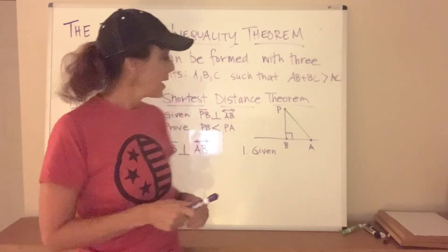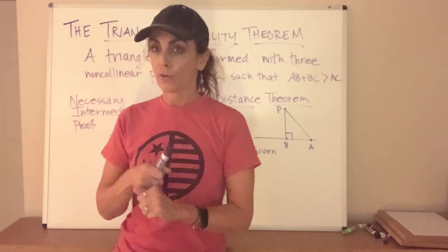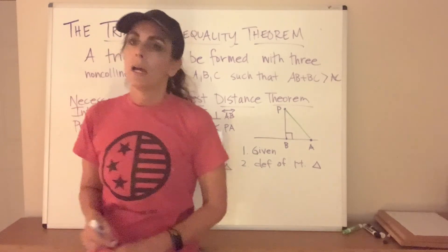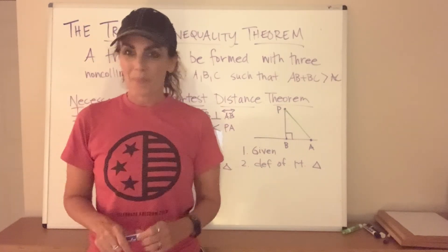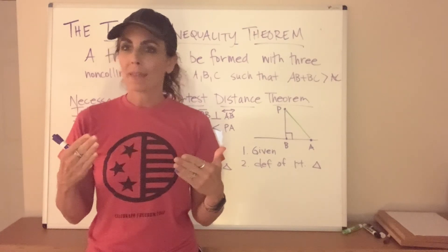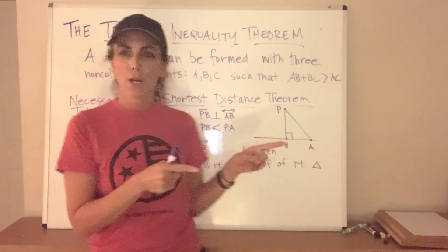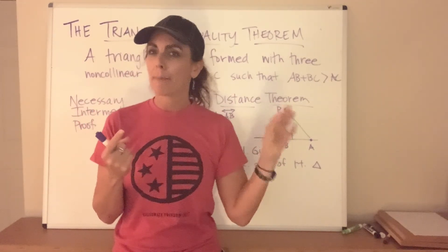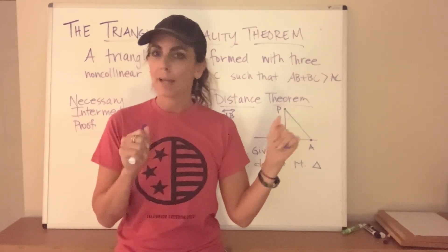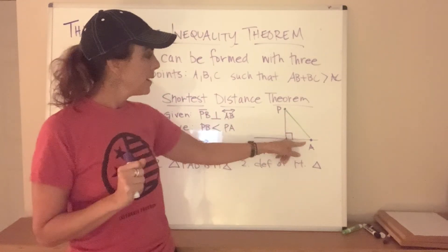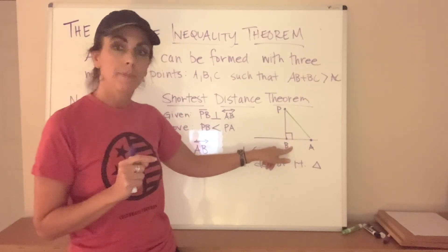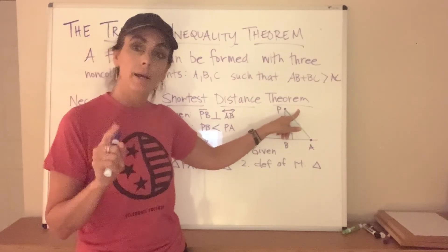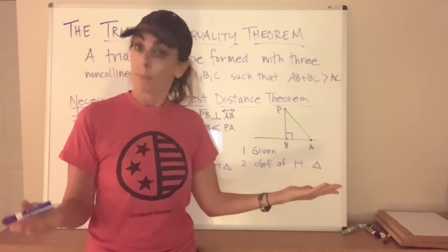We claim triangle PAB is a right triangle based on the definition of a right triangle. Next we're going to use the Pythagorean theorem. Remember: A² + B² = C², as long as C is the hypotenuse and A and B are the legs. In this case, the distance from A to B squared plus the distance from B to P squared is going to equal the distance from A to P squared. Let's write that down as the Pythagorean theorem.